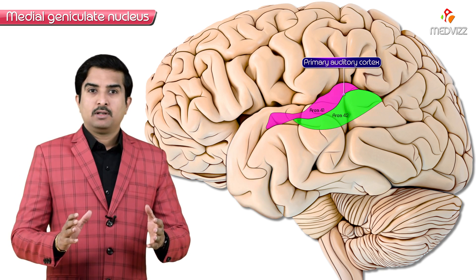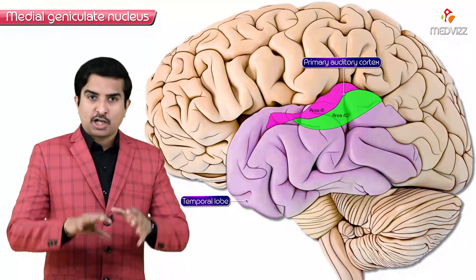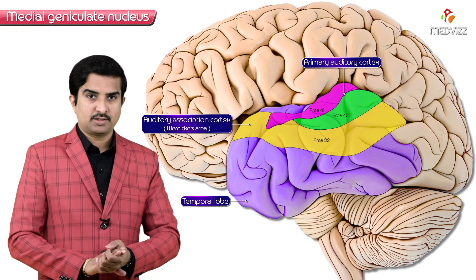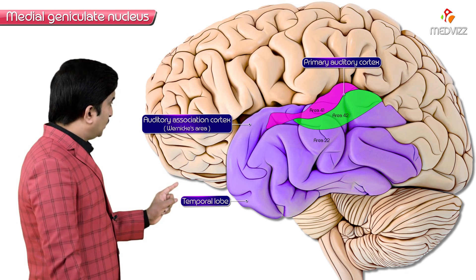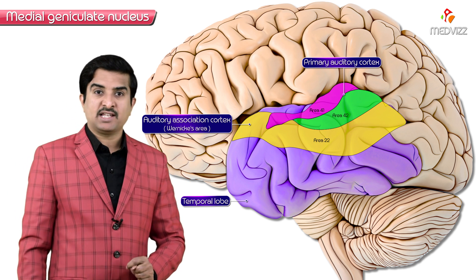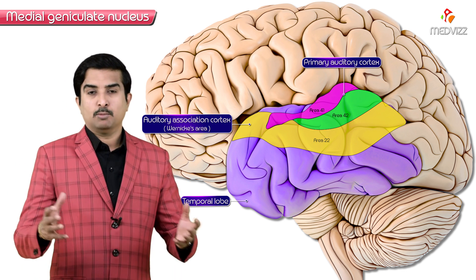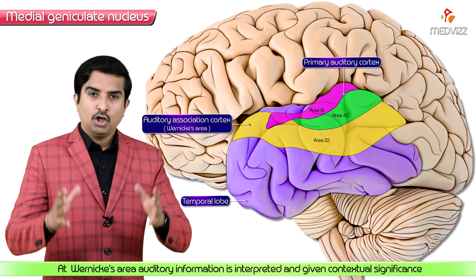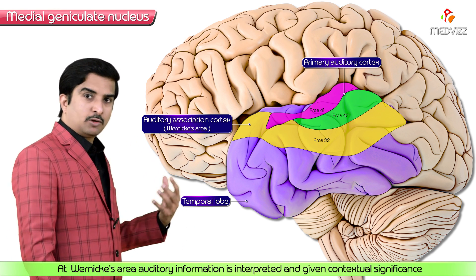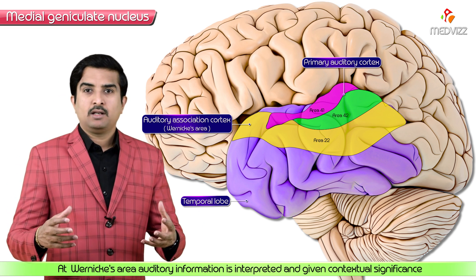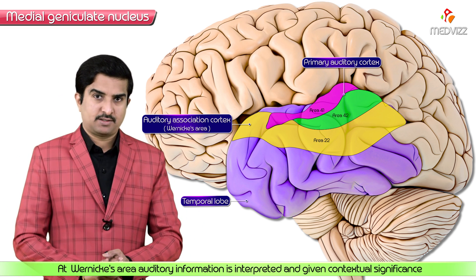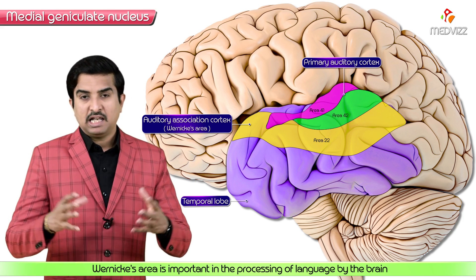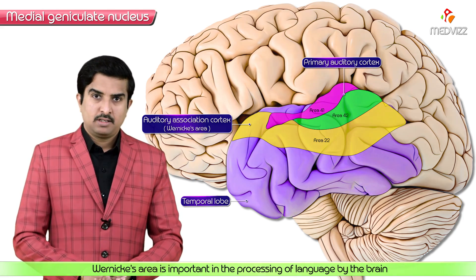The region of the temporal lobe surrounding the primary auditory cortex is known as the auditory association cortex, also called Wernicke's area, represented by Brodmann area 22. Here, auditory information is interpreted and given contextual significance. The Wernicke's area is important in processing language by the brain.